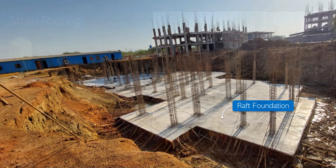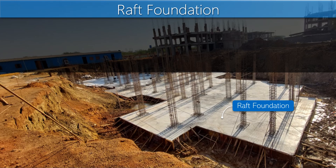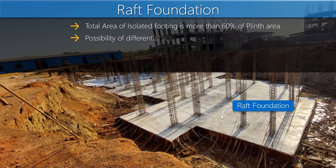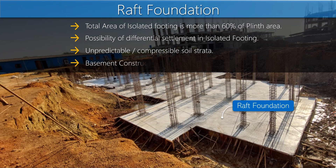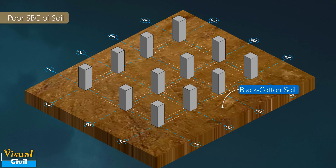The next type of shallow foundation is raft or mat foundation. Raft foundation is useful in the following conditions: first, when the total area of isolated footings would be approximately more than 60 percent of the total ground area beneath the structure; second, if there is a possibility of differential settlement when individual footings are used; third, when soil strata are unpredictable and contain pockets of compressible soil; and fourth, when a basement is to be constructed.